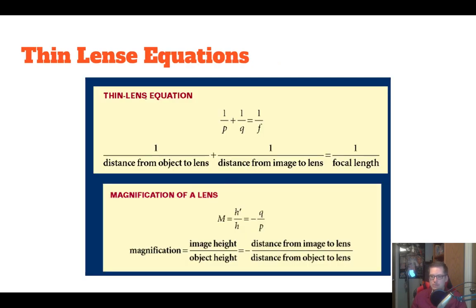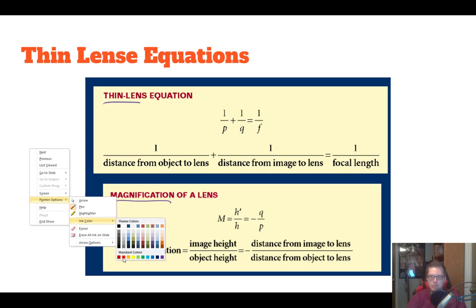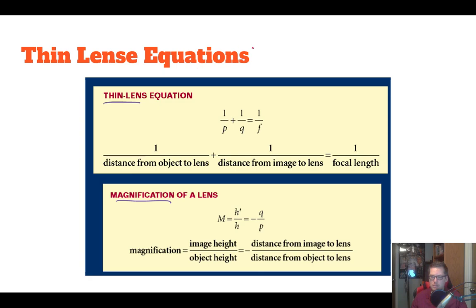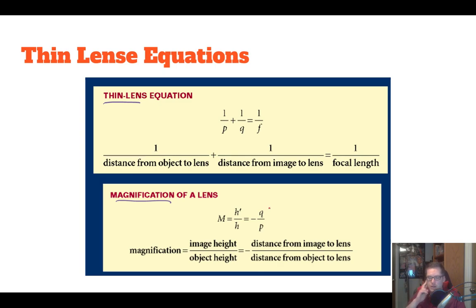We also have to do some math. We have two equations: the thin lens equation and the magnification equation. These are exactly the same equations we used with mirrors. P is our distance from the object to the lens, Q is the distance from the image to the lens, and F is our focal length. For magnification, H prime is the image height, H is the object height, and the magnification equals negative Q over P.